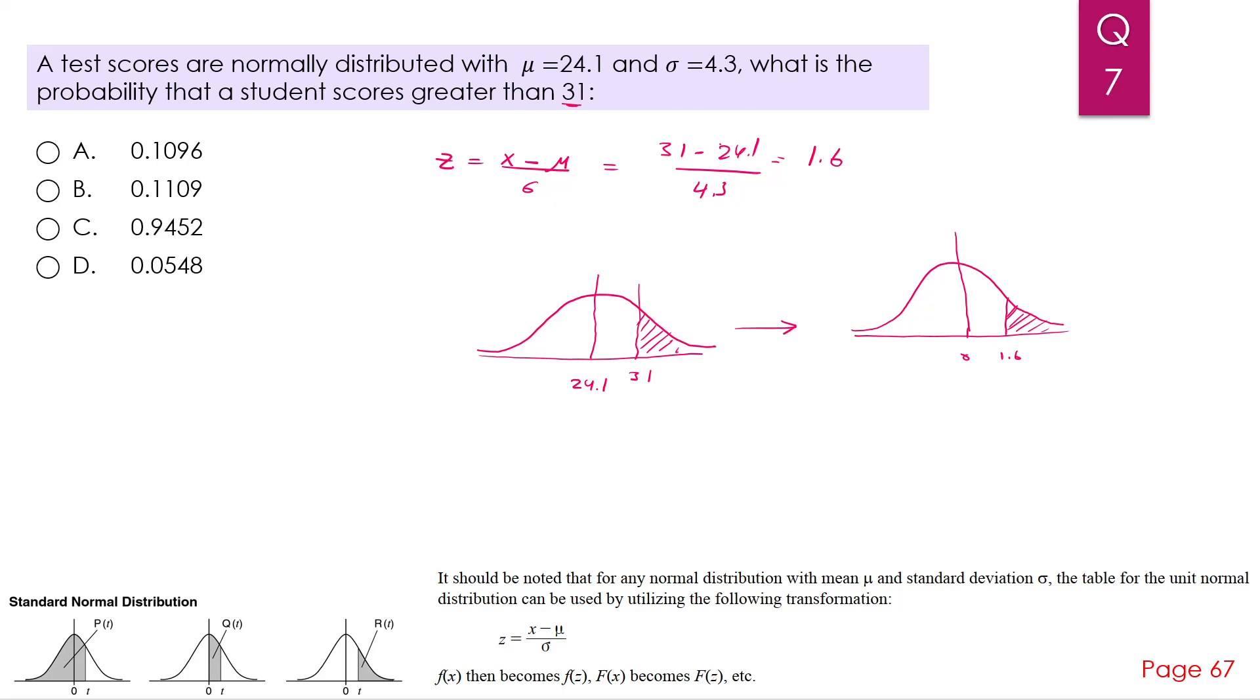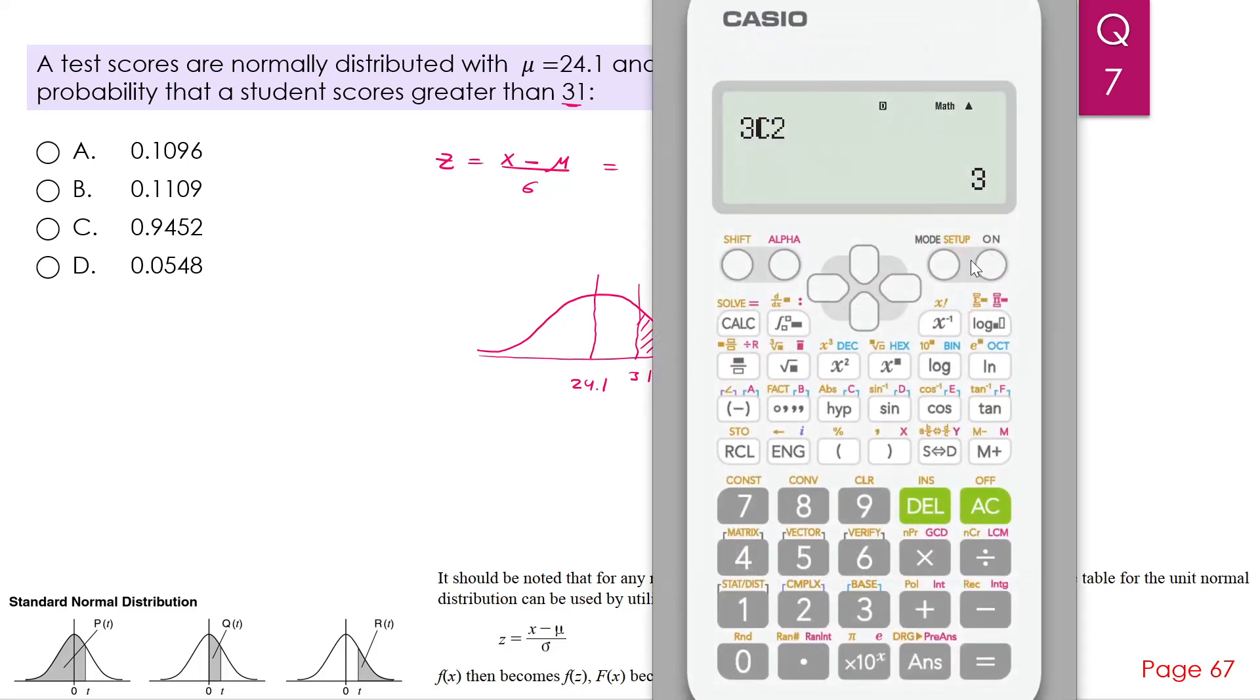Now if we don't want to go to the z table, it's there already in your calculator. You go to your statistics, number 3, you press number 1, then after that AC, then you go to shift, stat, then you go to distribution number 5. There is P, Q, and R. We are interested in R. The z value for us was 1.6, so you press number 3 for R, you put 1.6, close the parenthesis, it equals 0.0548, which is D.